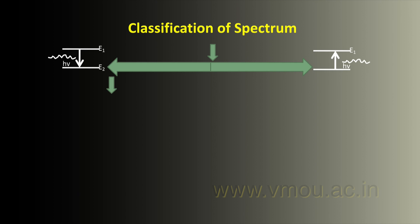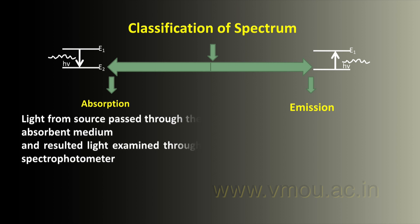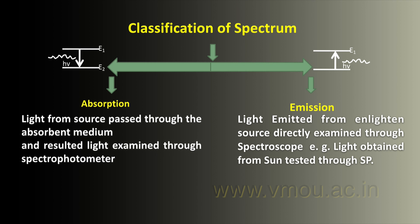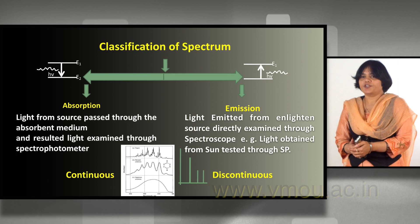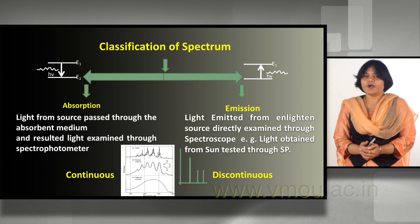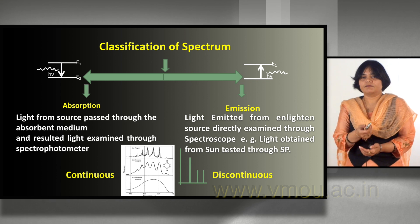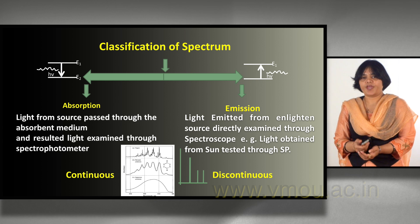The spectrum from a spectrophotometer can be classified into two forms. First is the absorption spectrum, where light from a source passes through an absorbing medium and the resulting light is examined through the spectrophotometer. The second is the emission spectrum, where light directly emitted from an excited source is examined. These spectra are of two kinds: continuous, shown as a white graph, and discontinuous, shown as a line spectrum.